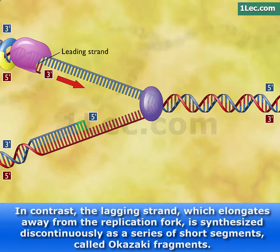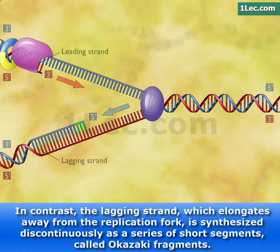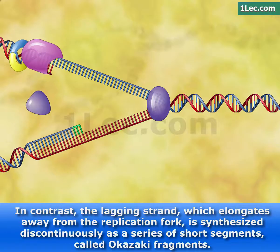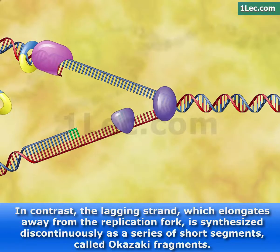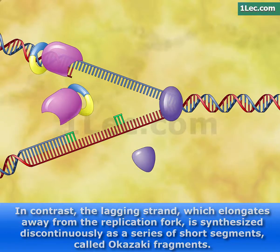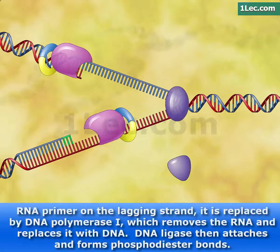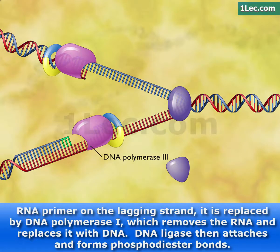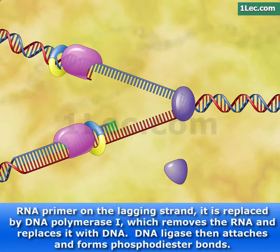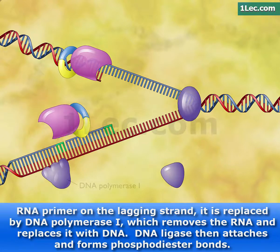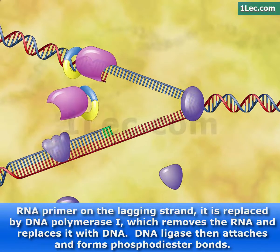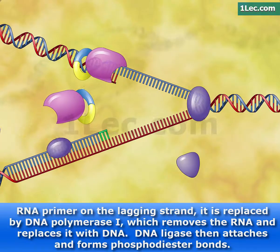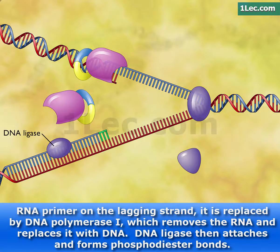In contrast, the lagging strand, which elongates away from the replication fork, is synthesized discontinuously as a series of short segments called Okazaki fragments. When DNA polymerase 3 reaches the RNA primer on the lagging strand, it is replaced by DNA polymerase 1, which removes the RNA and replaces it with DNA. DNA ligase then attaches and forms phosphodiester bonds.